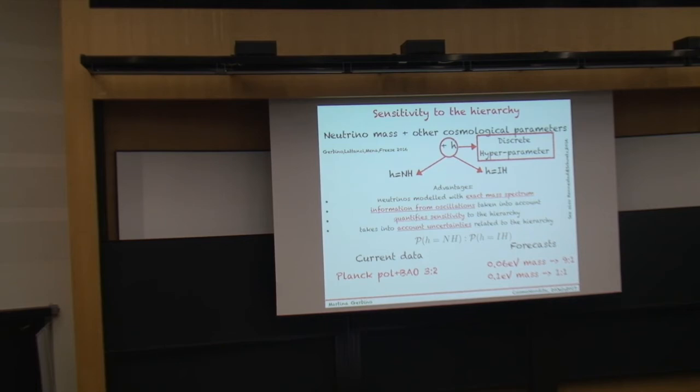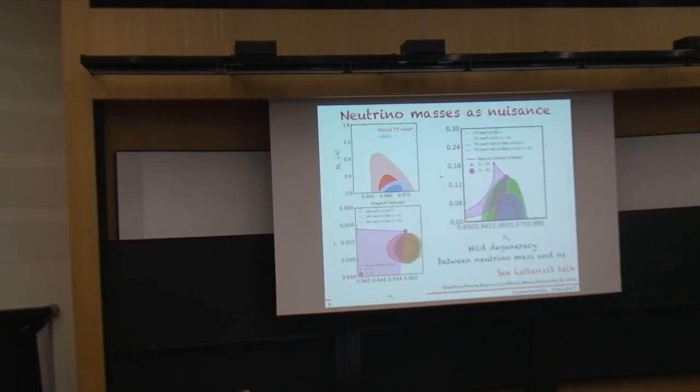To conclude, I would just like to take a different point of view and say that it is important to constrain, to the best of our knowledge, neutrino masses because they connect as nuisance parameters when we try to constrain other cosmological parameters, for example, inflationary parameters, because of slight degeneracies between the total neutrino masses and other cosmological parameters. For example, the scalar spectral index, because we can keep the shape of the power spectrum more or less fixed by playing with these two parameters.